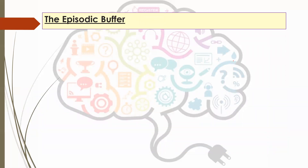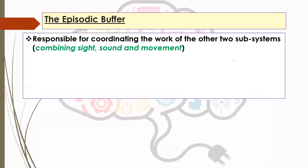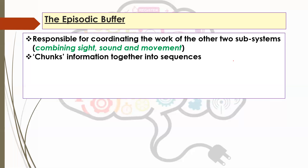We then come to the episodic buffer. This wasn't part of the original model — it was added in at a later date — but it has a crucial role. The episodic buffer is responsible for coordinating the work of the other two subsystems. It's the combination of the visual, movement, and map element of information combined with the sound and auditory information from the phonological loop. Each of those other subsystems does their thing, sends it back to the central executive, and then the episodic buffer pulls that information together — it chunks it — so it's not two different bits of information but one combined, more meaningful piece.